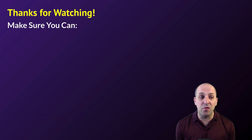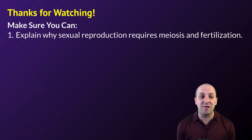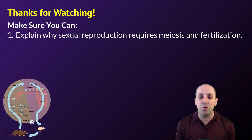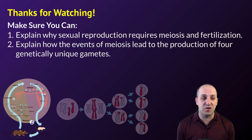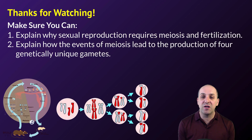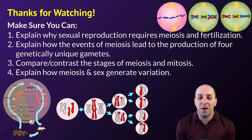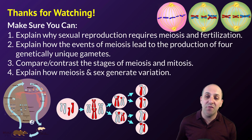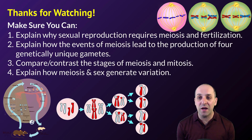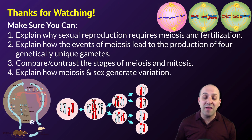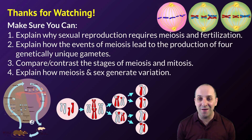Thanks so much for watching our video on meiosis. Make sure you can do the following things: explain why sexual reproduction requires meiosis and fertilization; explain how the events of meiosis lead to the production of four genetically unique gametes; compare and contrast the stages of meiosis and mitosis if you're given pictures; and explain how meiosis and sexual reproduction generate variation in a species. If you can do those things, you're doing great. If not, that's okay too — take a moment and write down any questions that you have so that you can get the answers that you need. Thanks again for watching, I really appreciate it. Have a great day.